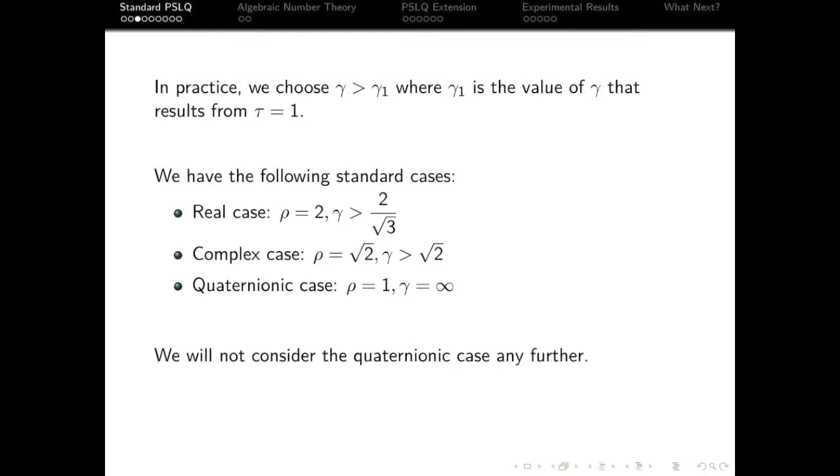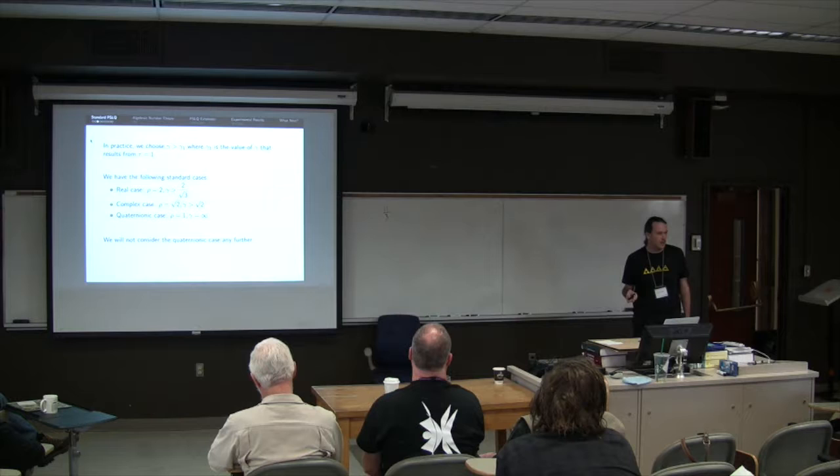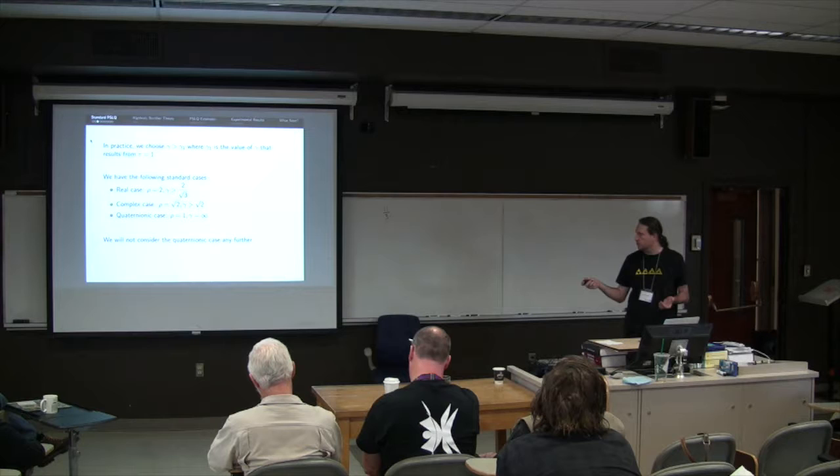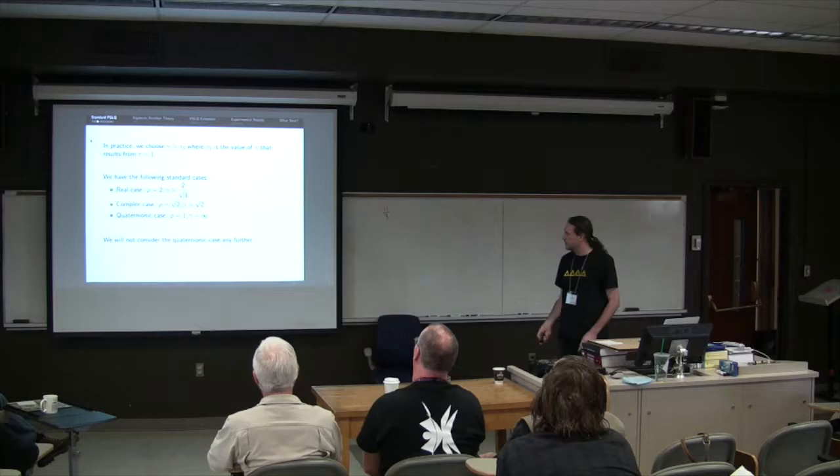And in the quaternionic case, we have rho equals one, which necessitates gamma being infinity. I'm not actually sure how that works in practice. But that's what the paper puts forward. I'm not going to consider the quaternions. I'm really interested in the real and complex cases anyway, in which case we could.